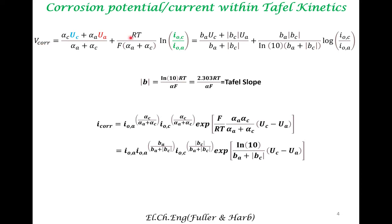Once you know the Tafel slope corresponding to the anodic reaction and the cathodic reaction, along with the cathodic equilibrium potential, anodic equilibrium potential, and the exchange current densities, you can plug these quantities in to get the corrosion potential. You can rearrange these quantities to also obtain the corrosion current. These two — corrosion potential and corrosion current — are the most important quantities with respect to corrosion. The derivation is not presented in this lecture but can be derived with some limited effort.